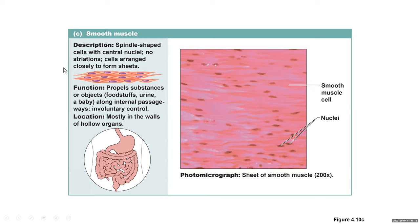Smooth muscle: spindle-shaped cells with central nuclei, no striations; cells arranged closely to form sheets. Function: propels substances or objects — foodstuffs, urine, baby — along internal passageways; involuntary control. Location: mostly in the walls of hollow organs, such as the stomach, small and large intestine, urinary bladder, and uterus.